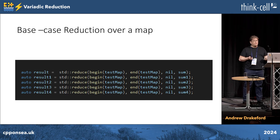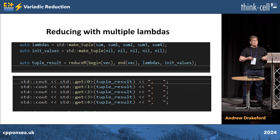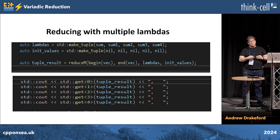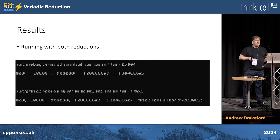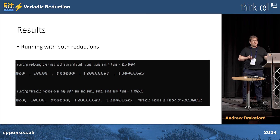Here are our lambdas going up to fifth order, and this is our base case. We're going to call reduce five times on the test map using these different lambdas. Our candidate performance improvement, reduce_m, will call reduce and build a tuple of lambdas to pass in along with a tuple of initial values set to nil. The result comes back as a tuple and we call get 0, 1, 2, 3, 4. When we run it, the good news is they give the same answer. The standard reduce comes back in about 22 seconds, and the variadic comes back in about 4.5 seconds — about 4.98 times faster.